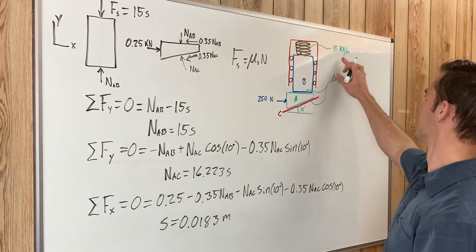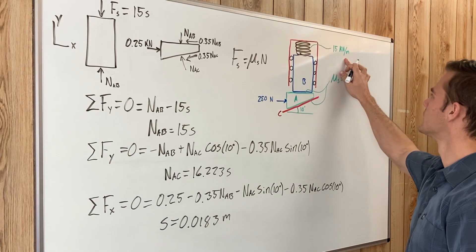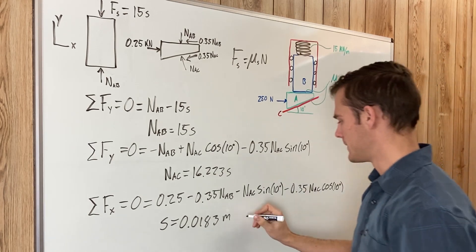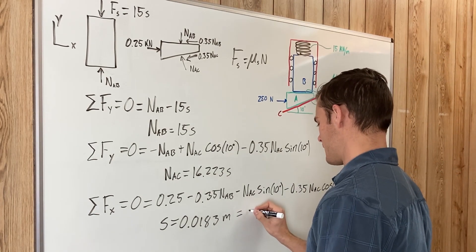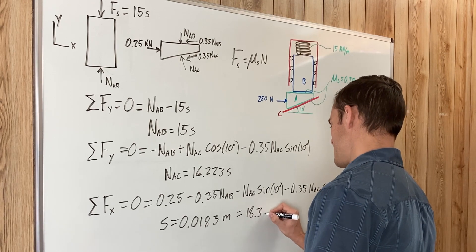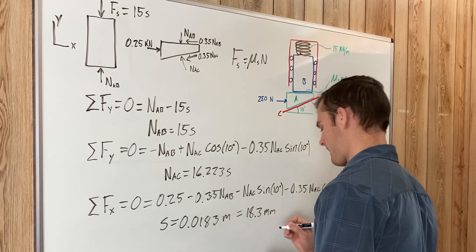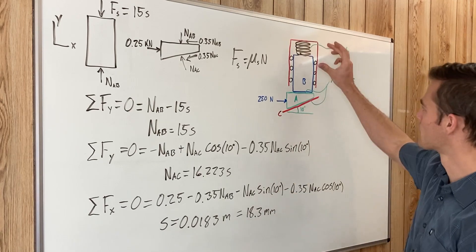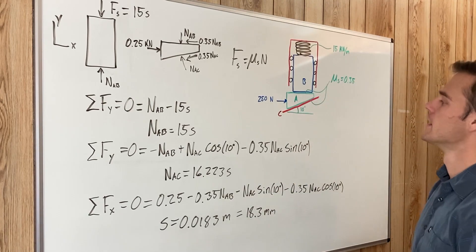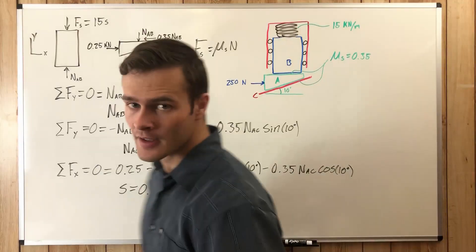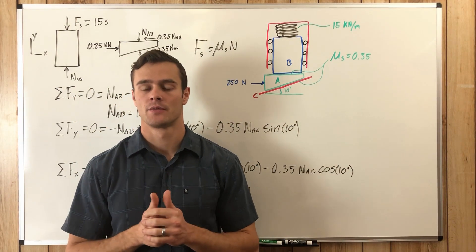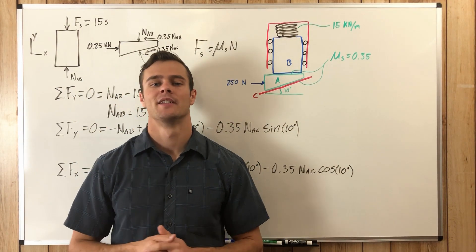Solving gives S equals 0.0183 meters, or 18.3 millimeters. Since we were working in kilonewtons per meter, the result is in meters. This is the spring compression required to keep the system in equilibrium — a complete example using wedges.